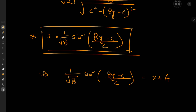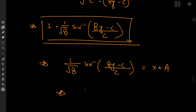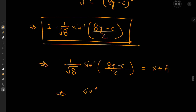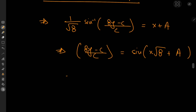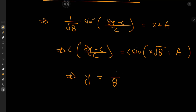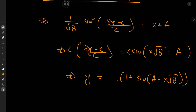Cleaning things up: multiplying through by √8, we get (8y minus c)/c equal to sine of (x√8 plus a√8). The constant a√8 can be absorbed into a new constant. Expanding and solving for y gives y equals (1/8) times c times (1 plus sine(a plus x√8)). The √8 factor can be absorbed into the constant c as well.